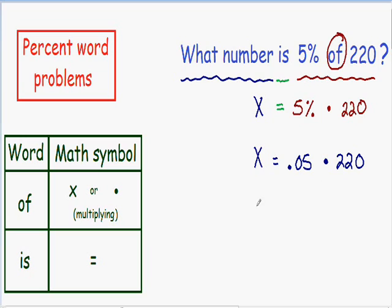So now in order to solve for x, the only thing we need to do is just multiply 0.05 times 220, which I'm going to do with the calculator. 0.05 times 220 is just 11.